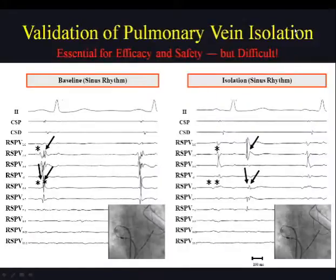Validation of PV isolation is essential for efficacy and safety, but it can be difficult. With the PVAC catheter, it might be as difficult or more difficult than with a conventional circular mapping catheter, and I will explain why.